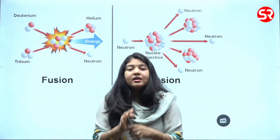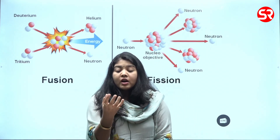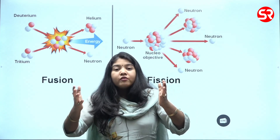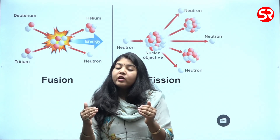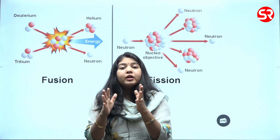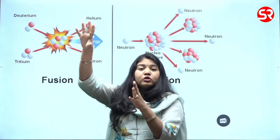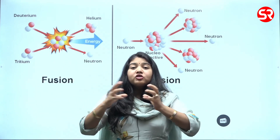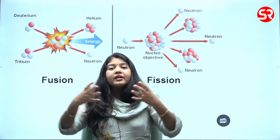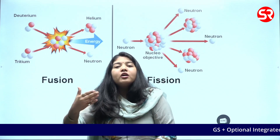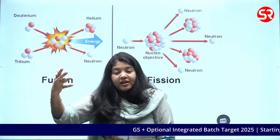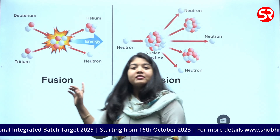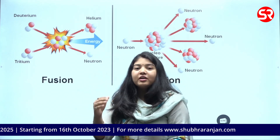Whenever there is any sort of tinkering with the nucleus of an atom, the amount of energy released will be very high. In nuclear fission, I take a bigger element — uranium — which has atomic number 92. Natural uranium comes as uranium-238, or enriched uranium. When this big structure gets fissioned — broken — a huge amount of energy is released along with various byproducts. Let us understand fission first and then we will understand fusion.